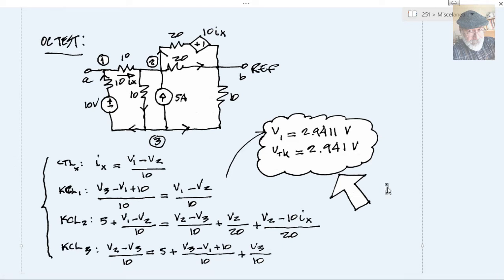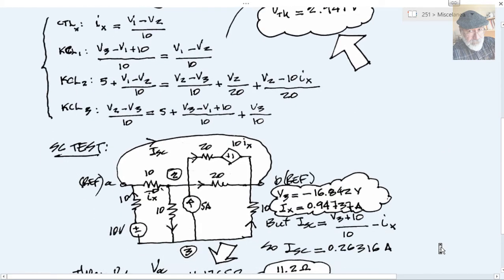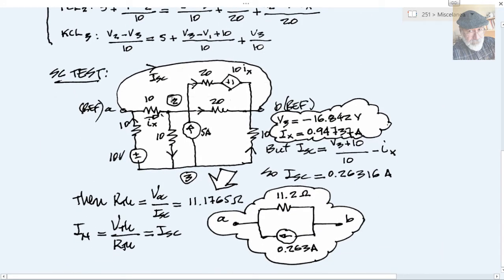For the second part, to find R_Thevenin we need the other test, the short circuit test. The short circuit test is performed by shorting the port AB. A wire is added between A and B that transforms node A into an extension of the reference. You see, it's a reference node. We don't have node 1 anymore. We have only node 2 and node 3 and Ix.